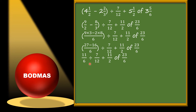Now here are three things: division, addition, and off. According to BODMAS, after solving the bracket we need to solve 'off', and we treat 'off' as multiplication. So we multiply the numerators with each other and the denominators with each other. The division and addition remain as they are. We multiply 11×23 = 253, and 2×6 = 12.